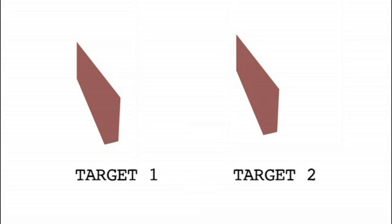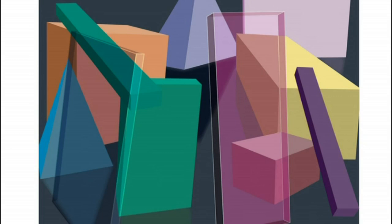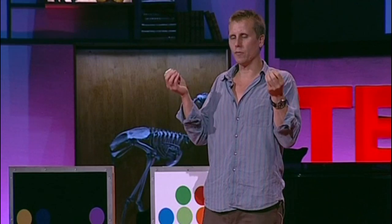Let me show you what I mean. Imagine that this is the back of your eye, and these are two projections from the world. They're identical in every single way — identical in shape, size, spectral content. They are the same as far as your eye is concerned. And yet, they come from completely different sources. The one on the right comes from a yellow surface, in shadow, oriented facing the left, viewed through a pinkish medium. The one on the left comes from an orange surface, under direct light, facing to the right, viewed through a sort of bluish medium. Completely different meanings, giving rise to the exact same retinal information. And yet, it's only the retinal information that we get.